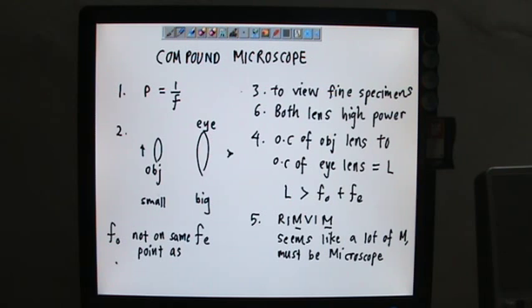The Fo is not on the same point as Fe, as we will see later. The optical center distance is the length L, and since Fo and Fe are not on the same point, L is more than Fo plus Fe.